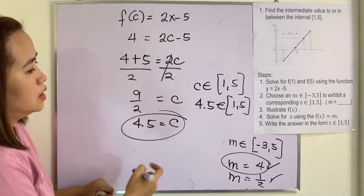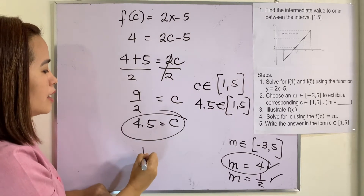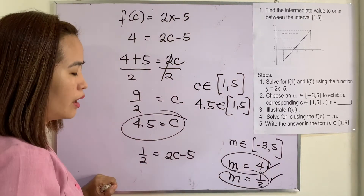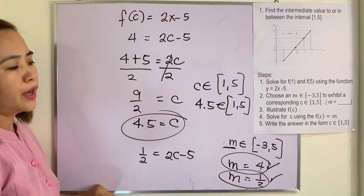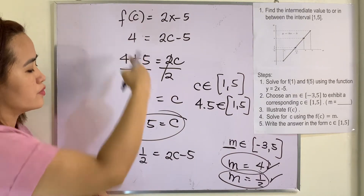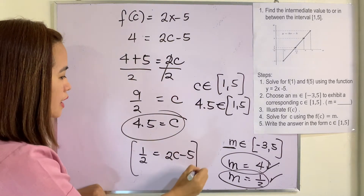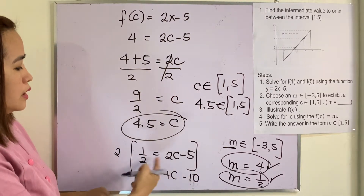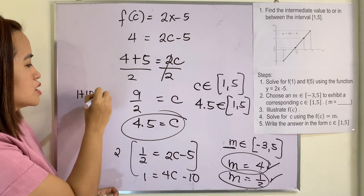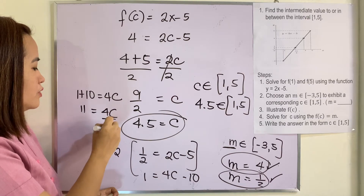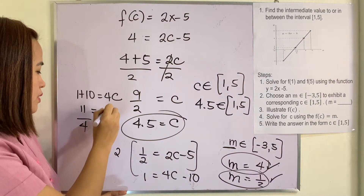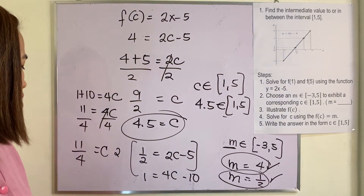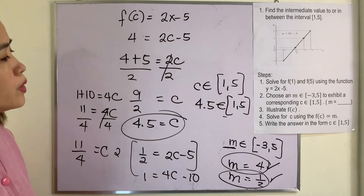What about m = 1/2? If we replace m by 1/2, this is 1/2 equals 2c minus 5. We get the LCD, which is 2. This gives us 1 equals 4c minus 10. Calculating c: 1 plus 10 equals 4c, so 11 equals 4c. Divided by 4 on both sides, c is equivalent to 11/4. Is 11/4 an element of the interval [1, 5]? Yes, because 11/4 is approximately 2.75.